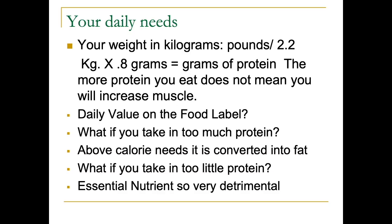In general, your body needs approximately 0.8 grams of protein per kilogram of body weight. If you know your weight in pounds, divide it by 2.2 to get your weight in kilograms, then multiply by 0.8 to get the grams of protein you need per day. For instance, if you weigh 120 pounds, divide by 2.2 to get about 54.5 kilograms, multiply by 0.8, and you get about 44 grams of protein per day — 120 pounds is a very small person, so most people need to be consuming a fair amount of protein every day.